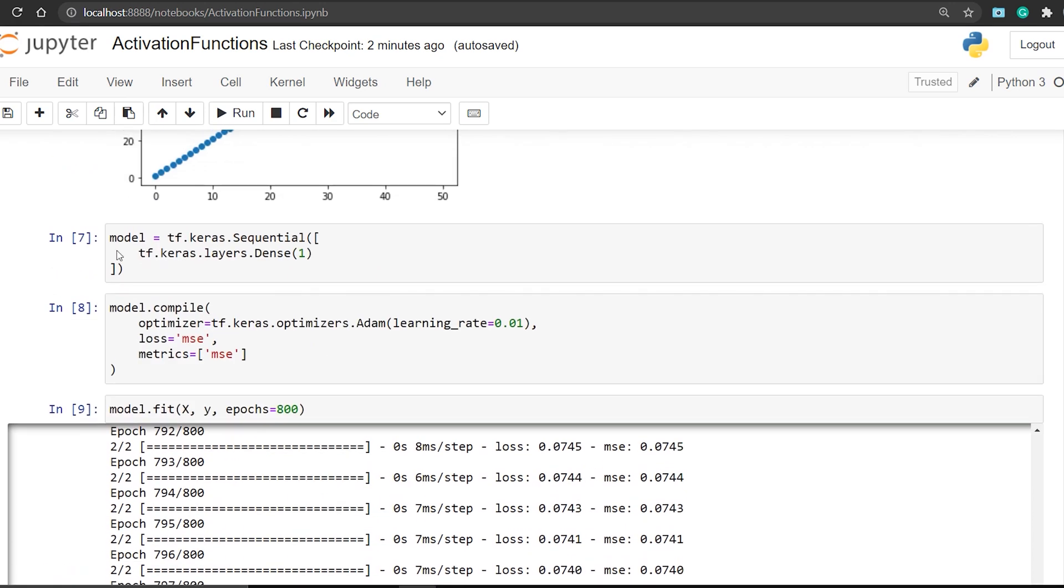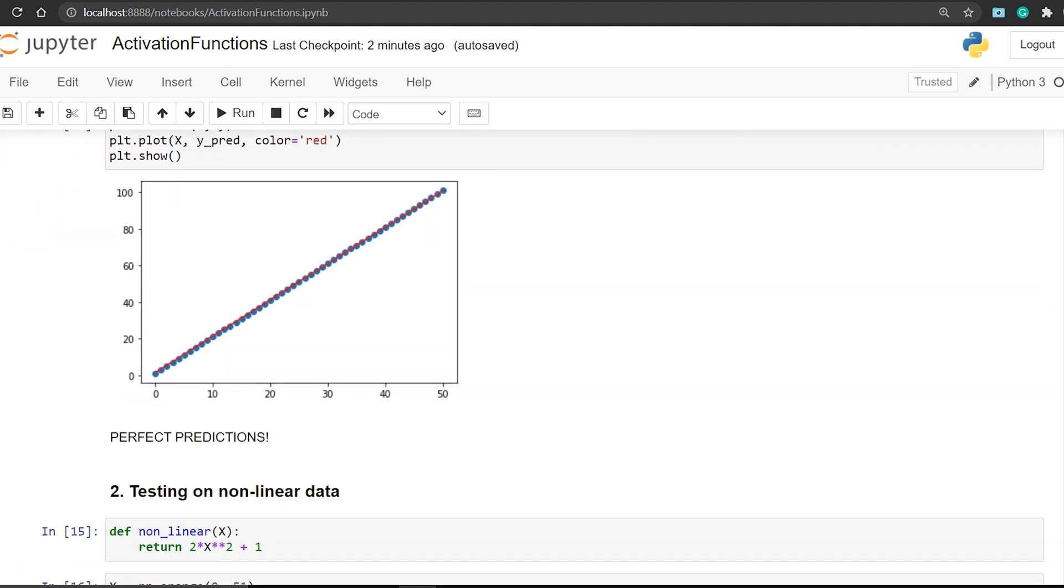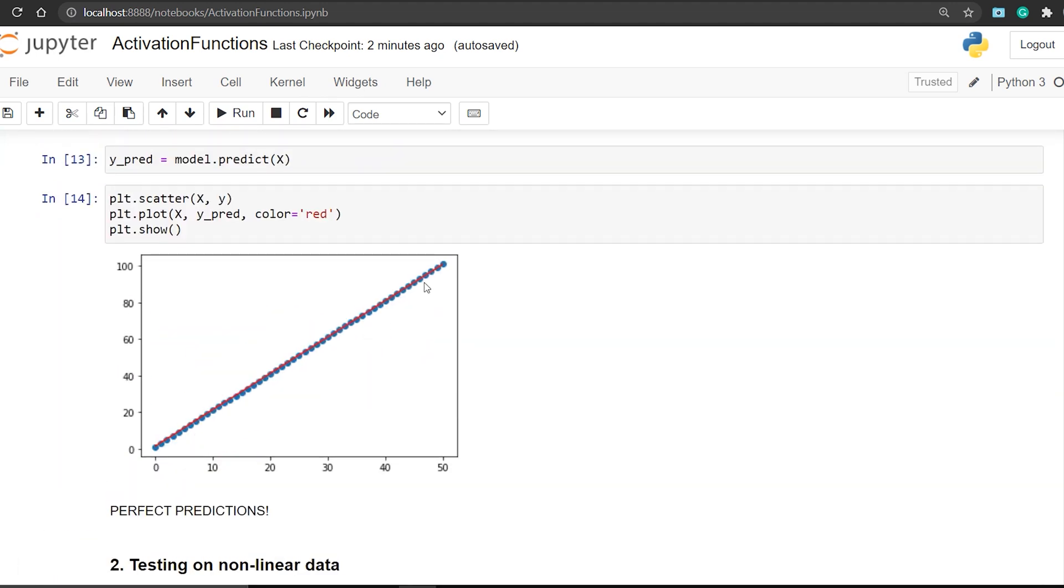Let us fit the model on this data without any activation functions and see what happens. I have created a model with only one neuron. If you don't know what the sequential and compile thing means, just ignore it and focus on the end result for now. We will be discussing all this in depth in future videos.